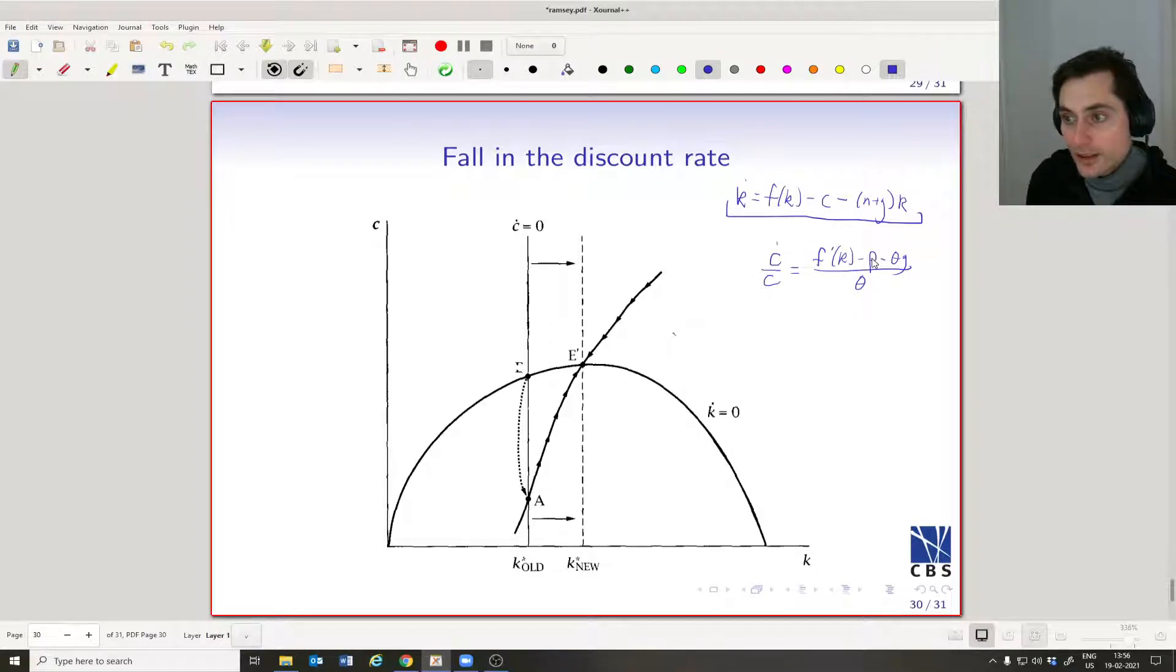So when we have a fall in the discount rate, it means we're going to be moving the c-dot line to the right. If we have a fall in this discount rate, we have something that's less negative now, so people become more patient, and we're going to have a new level of k-star that's going to involve more saving or a higher level of steady-state capital stock.